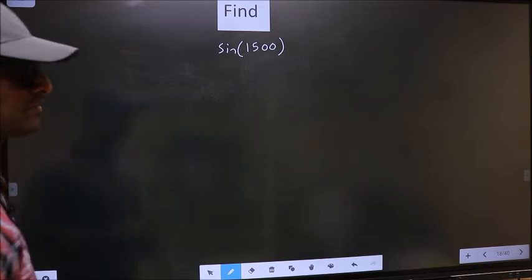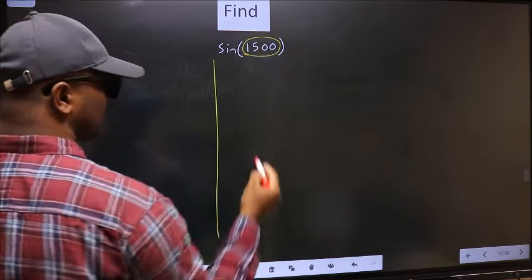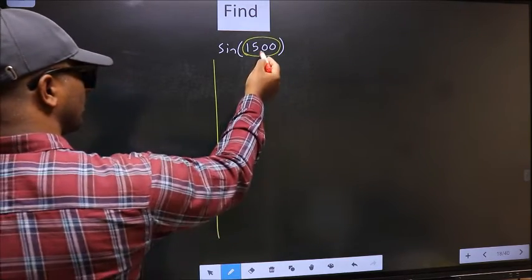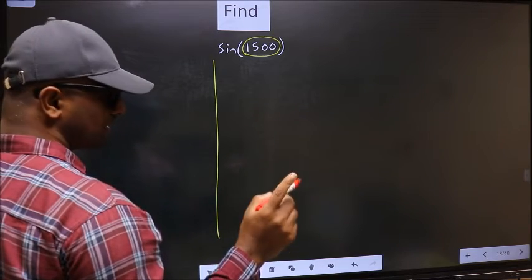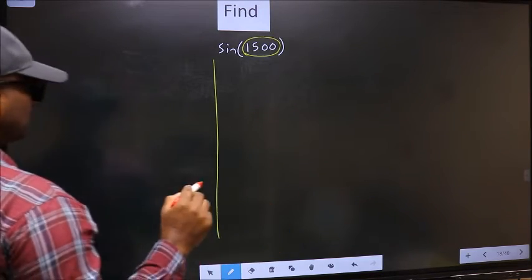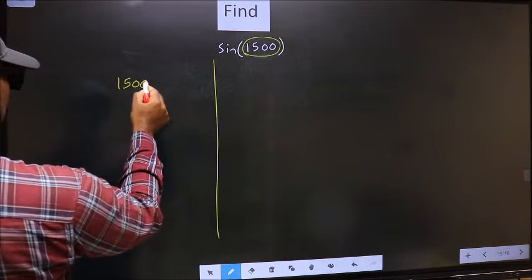Here we have 1500. Now you should check which two multiples of 180 the value 1500 lies between. What I mean is, 1500 lies between